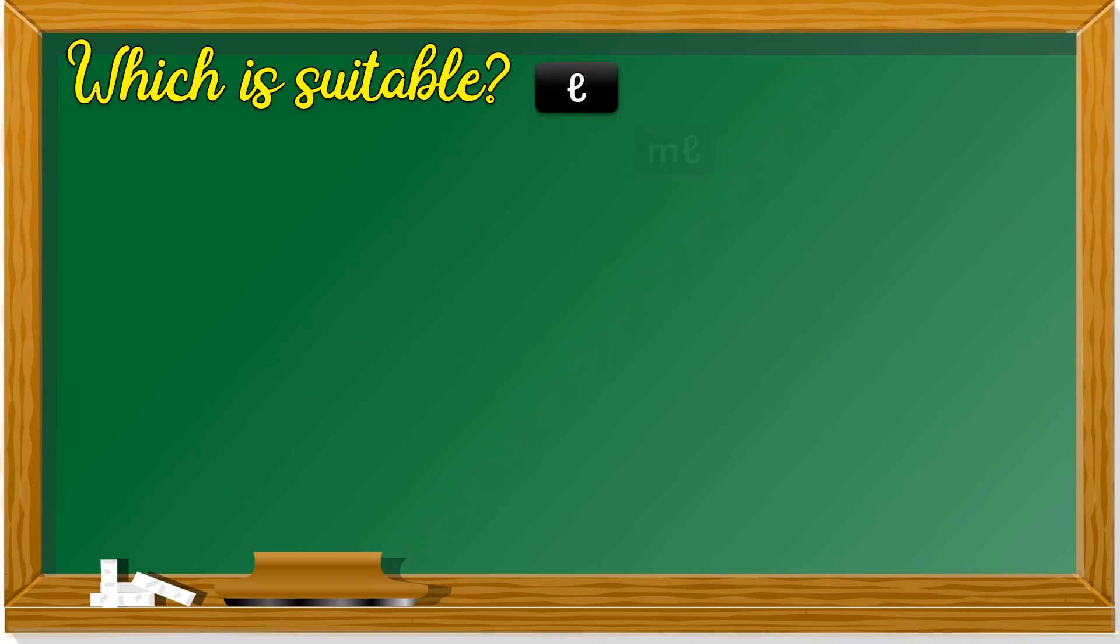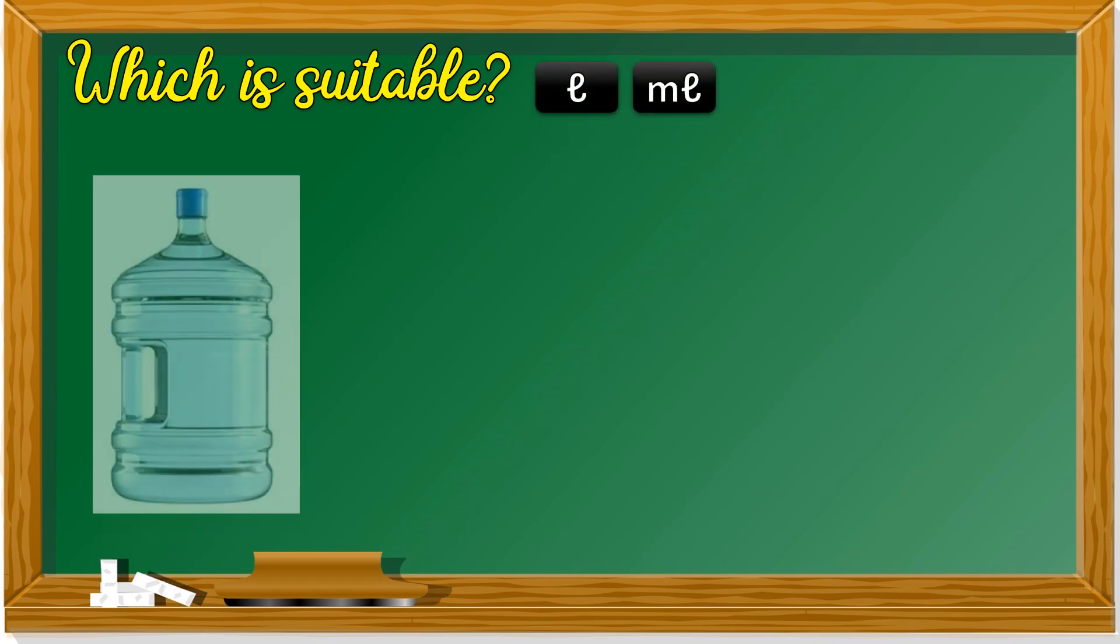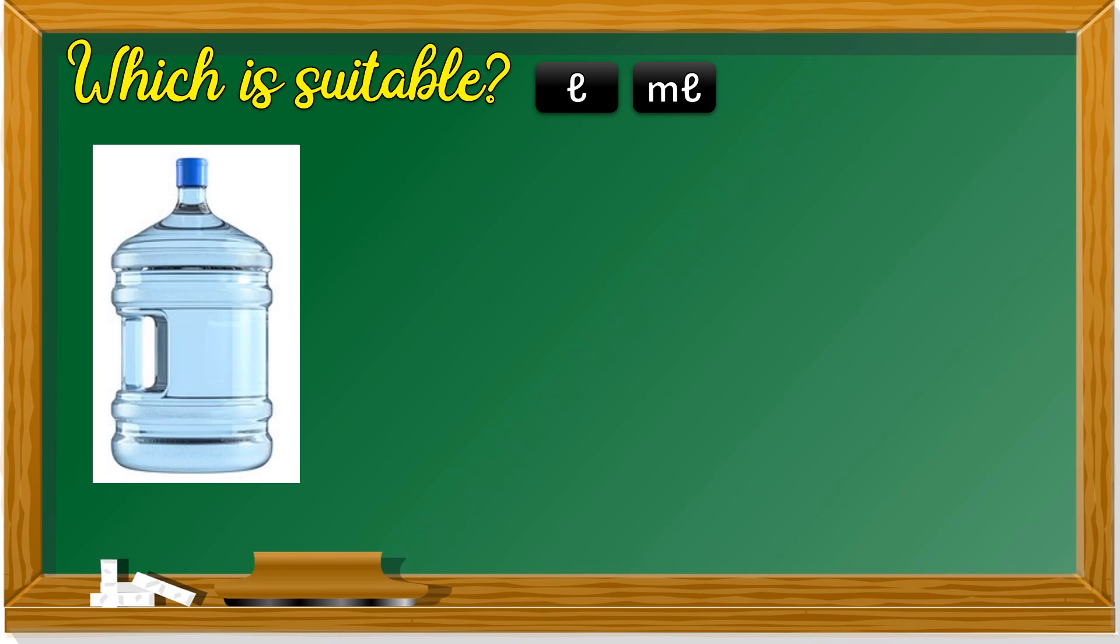Next one, which is suitable? L or ML? A big barrel of water. L or ML? L? It's liter. L. Did you guess it correctly? Very good.